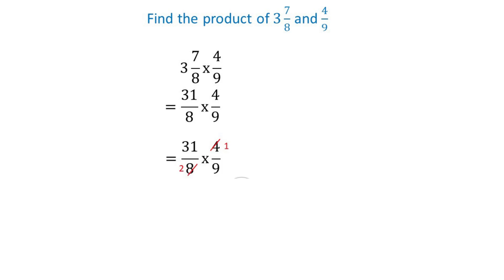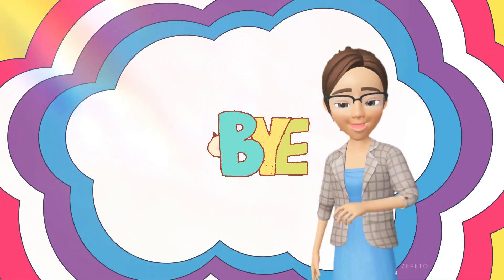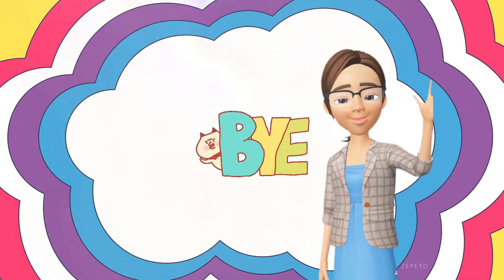Multiply numerator with numerator and denominator with denominator, so we'll have 31 over 18. Since 31 over 18 is an improper fraction, convert to a mixed number — we will have one and 13 over 18. That's all for today, bye!